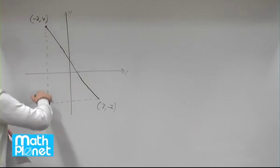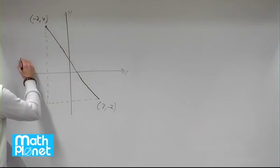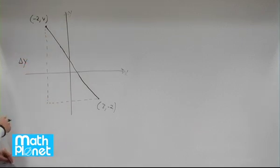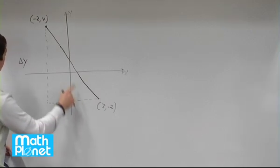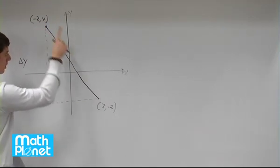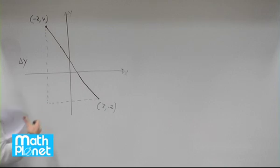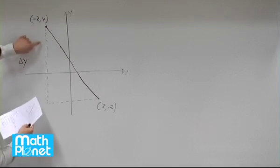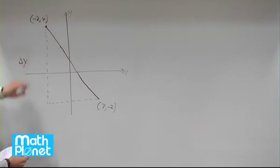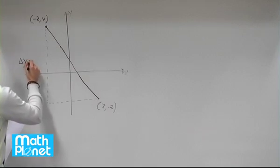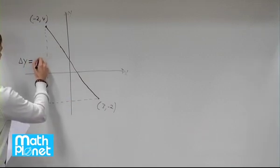This distance is the delta y, the rise or the change in height. So what that distance is, is the distance between 4 and negative 2. The distance between 4 and negative 2 is 1, 2, 3, 4, 5, 6, so 4 plus 2 in other words. Delta y is going to be 6.